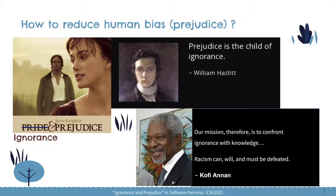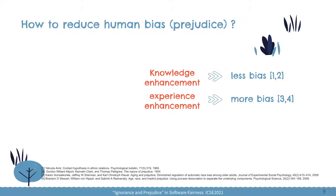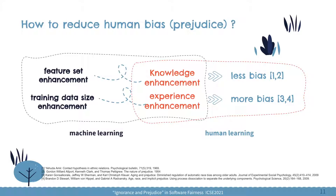It's long been recognized that prejudice is the consequence of ignorance. And Kofi Annan once also said: when we confront ignorance with knowledge, racism can, will and must be defeated. There is also scientific evidence in the psychology domain that knowledge enhancement leads to less bias, but experience enhancement leads to more bias. So this is in human learning. In machine learning, there is this interesting connection between feature set enhancement and knowledge enhancement.